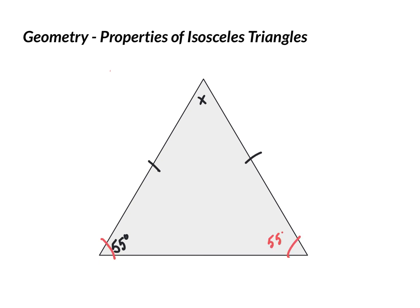And, again, maybe the most algebraic way is to think that x plus those two 55-degree angles equals 180. So, x plus 110, subtract 110 from both sides, x is equal to 70 degrees.